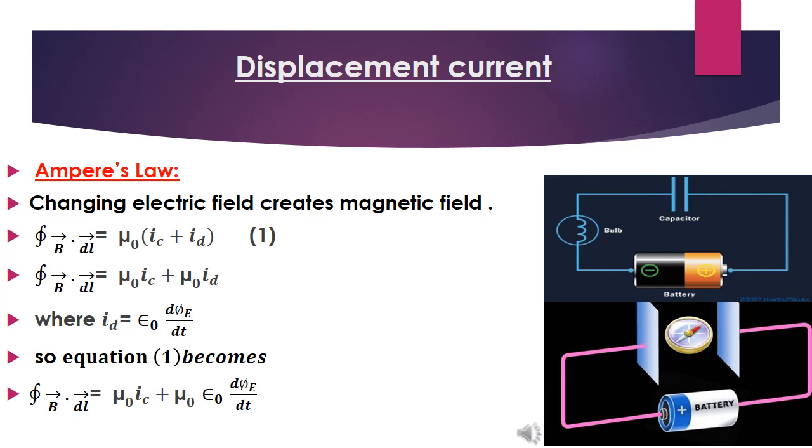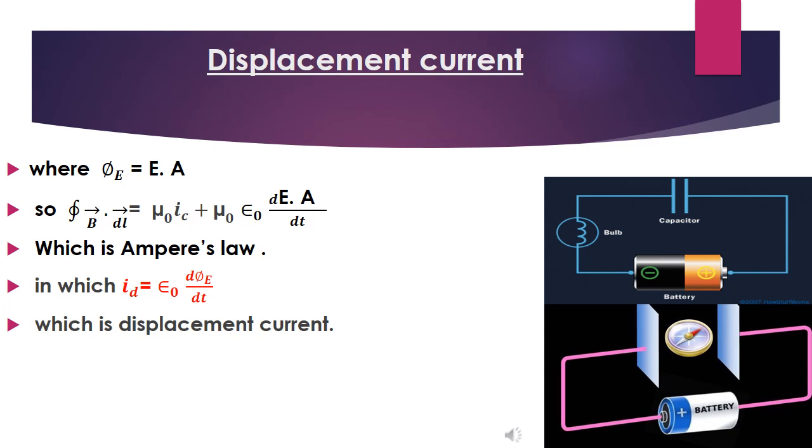So, close integral b dot dl equals to mu naught i which is plus mu naught putting the value of id which is epsilon naught d phi E by dT. So, it is modified Ampere's law which we call Ampere's Maxwell law, in which ID equals to epsilon naught d phi E by dT which is displacement current.